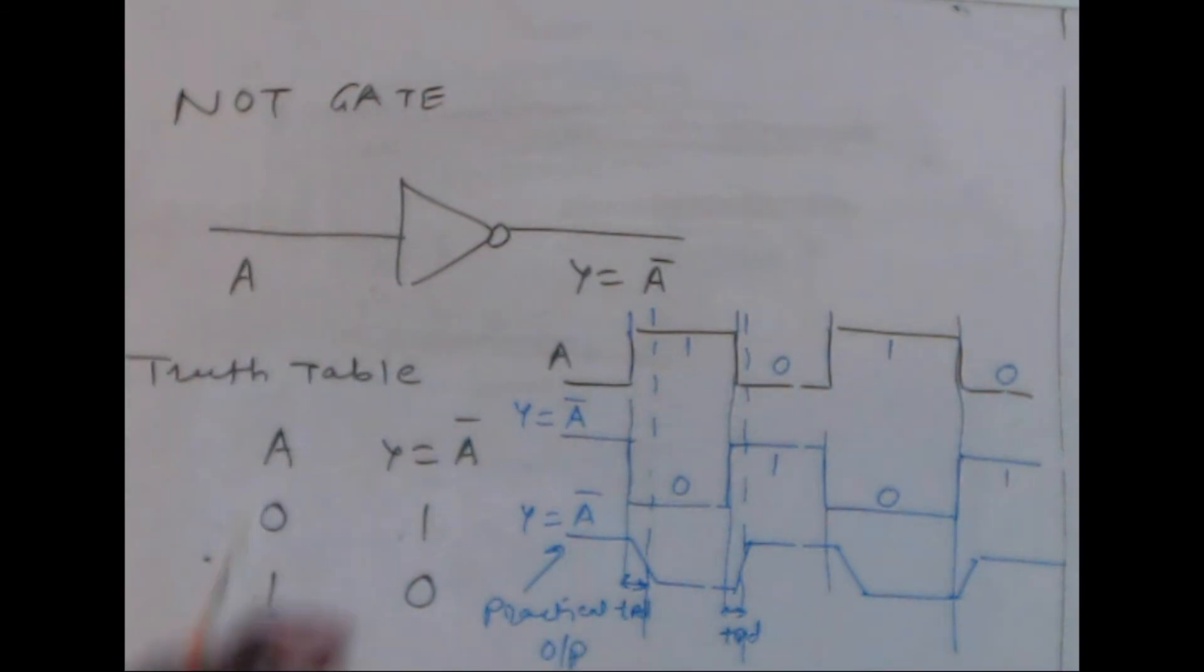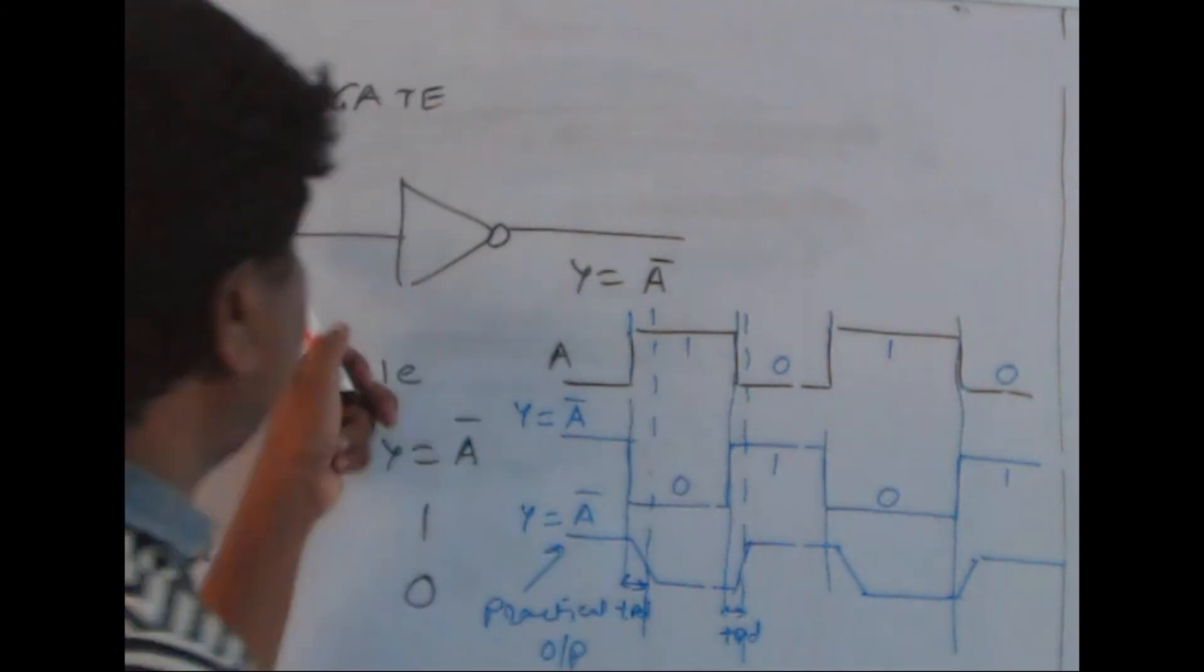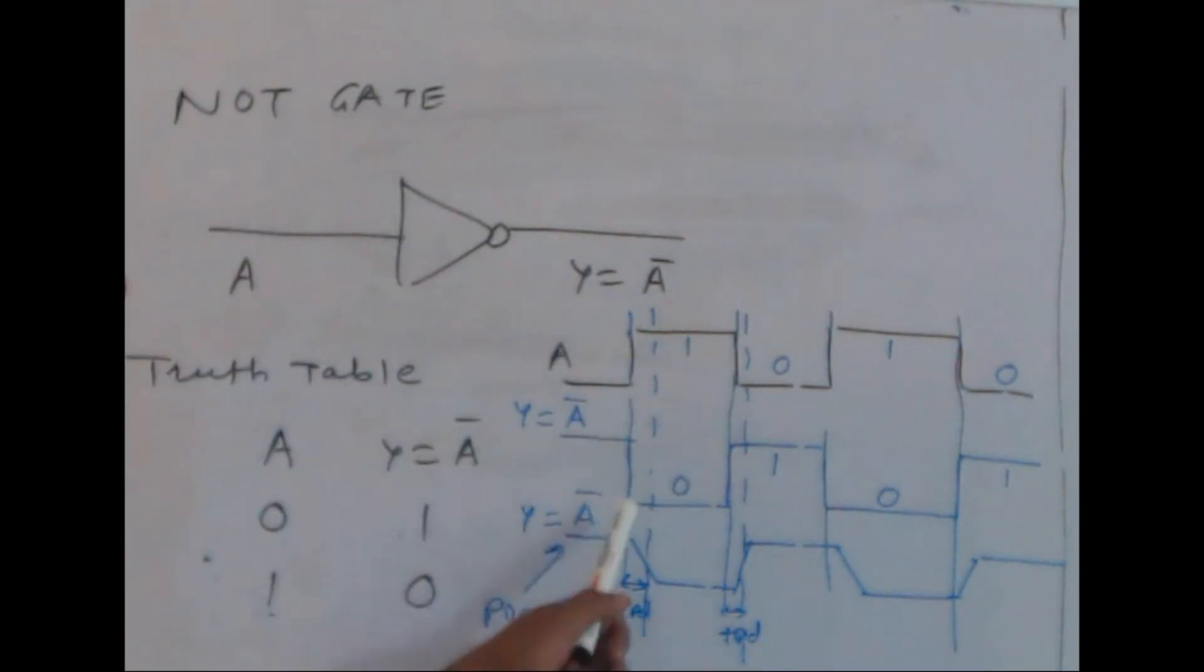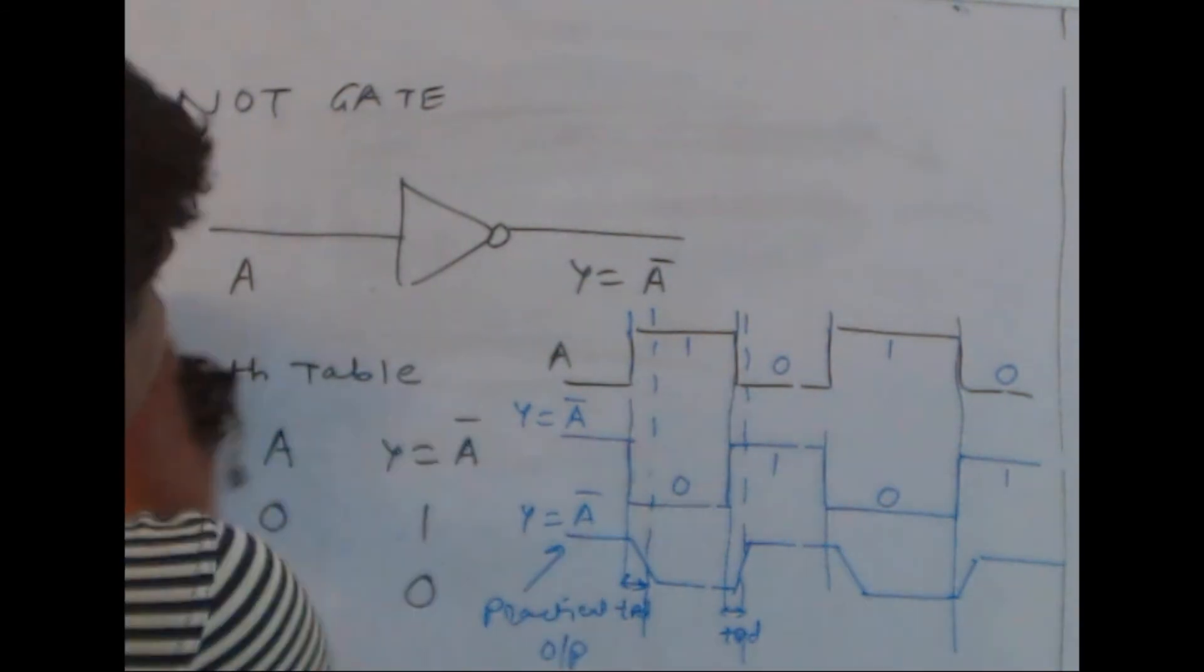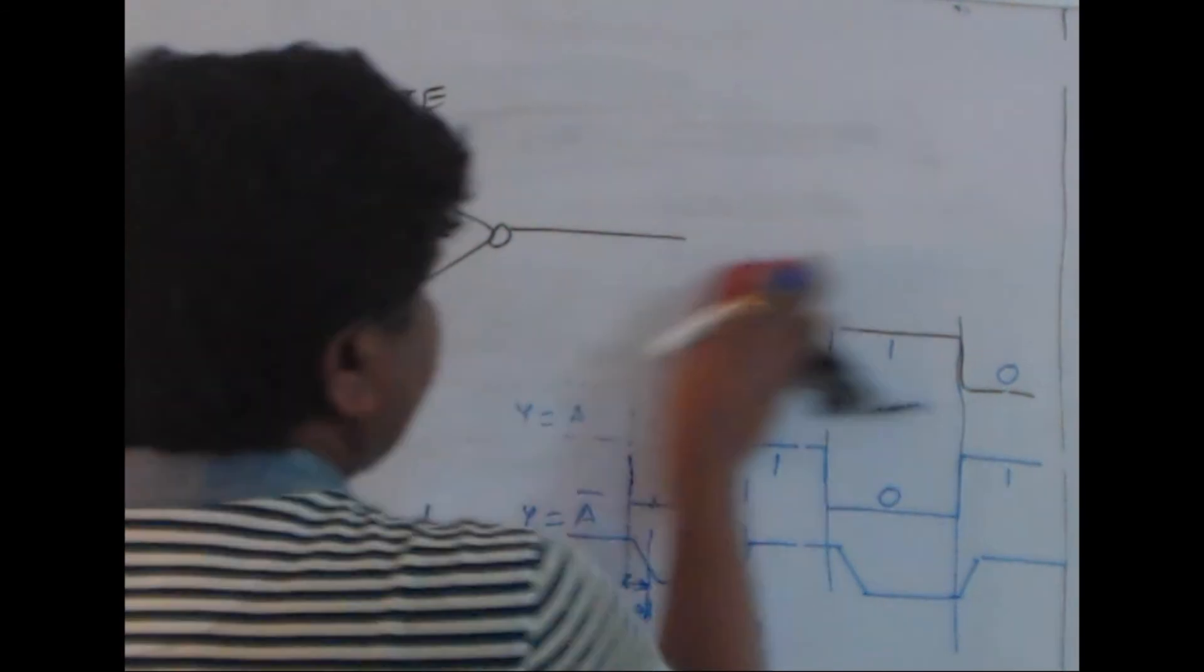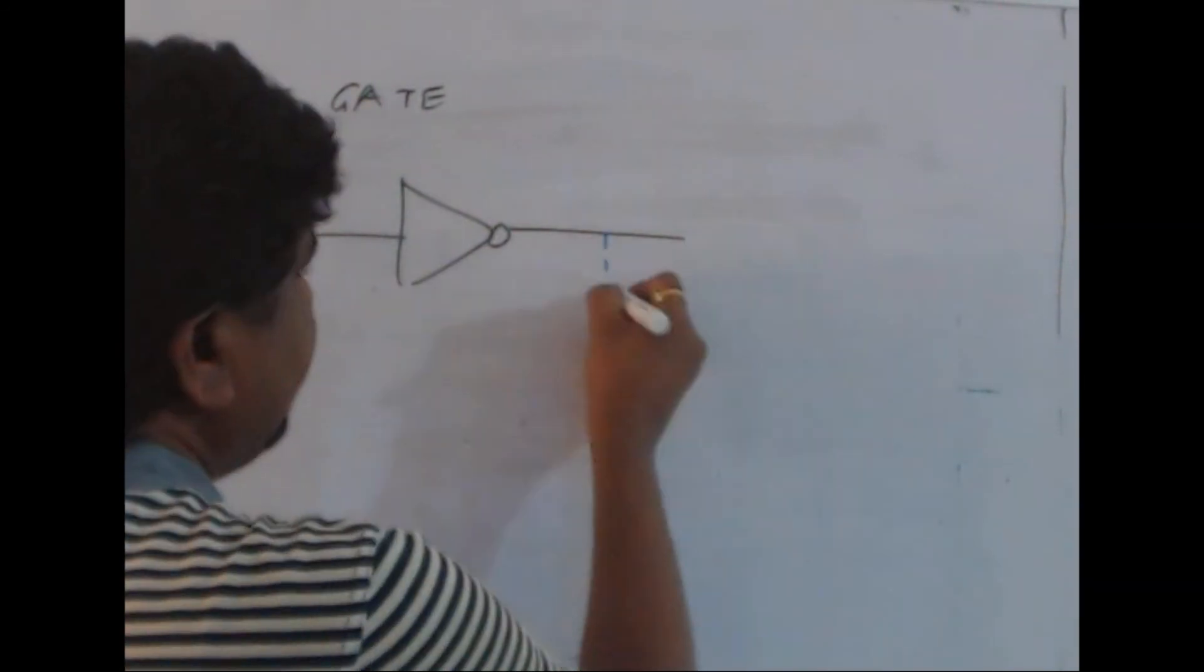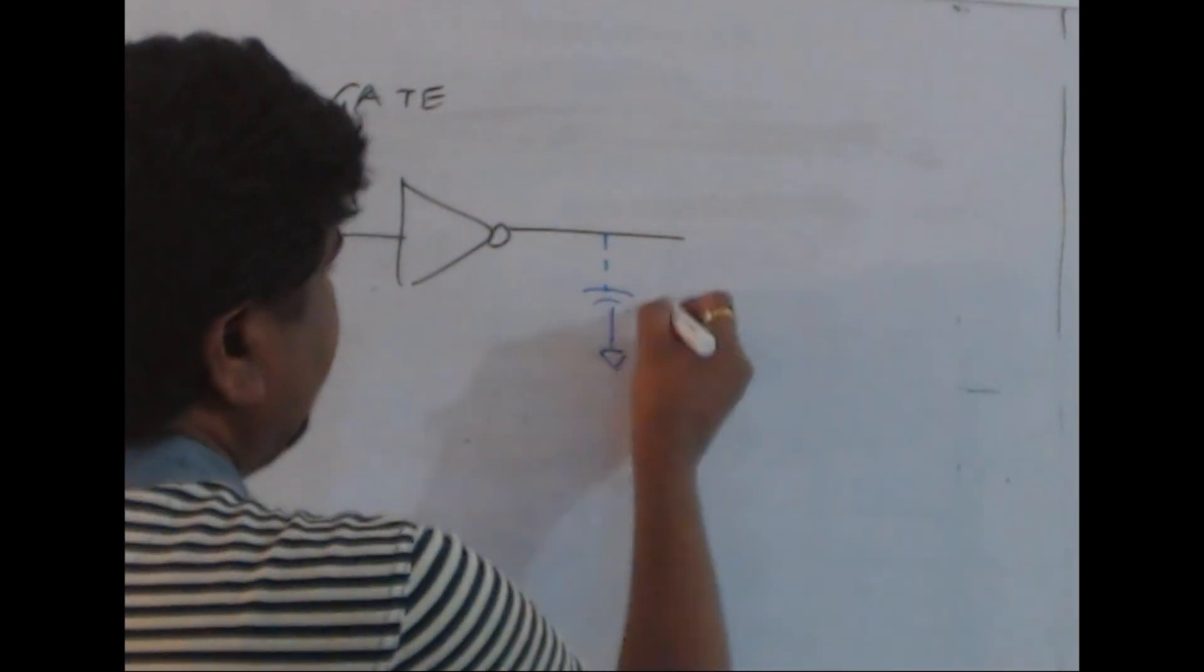Why does this happen? Whenever input changes from 0 to 1, I will not immediately get output from 1 to 0 - there is some inertia of this gate. This happens due to the formation of stray capacitance or load capacitance. There is formation of stray capacitance for every logic gate, which is Cs.